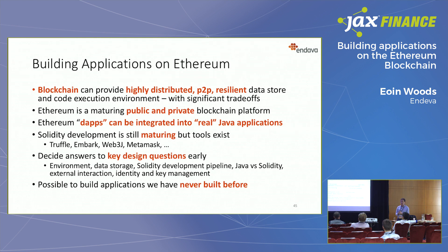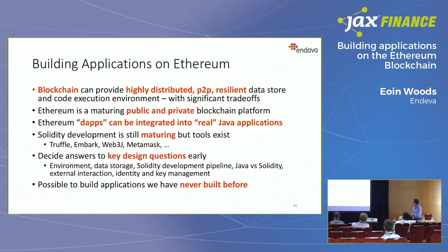To summarize: blockchain is a distributed peer-to-peer database with some really quite amazing qualities around scale and trustworthiness. Ethereum DApps — smart contract applications — typically need to be used with something else, and today in 2018 it's perfectly practical to integrate them into enterprise Java applications. The Solidity development environment is still maturing, but the tooling is getting better all the time — and Web3J makes it look pretty much like calling a network service.